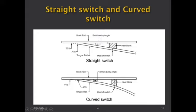Regarding fixed heel and loose heel types: in the loose heel switch there is a joint at the heel, with a heel block having four bolts — two tightened and two loose — so the tongue rail can operate. We had straight switches with both fixed heel and loose heel arrangements, but these have all become obsolete now.